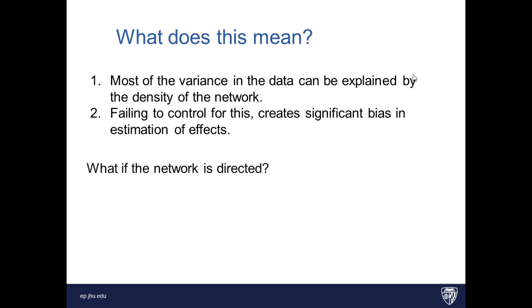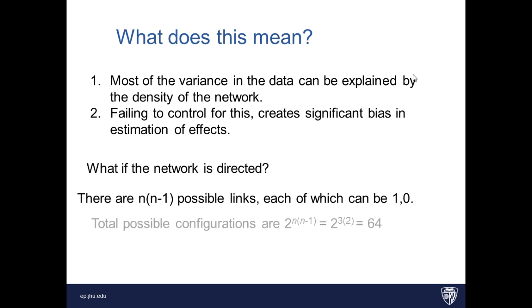Okay? What happens if the network is directed? We were only looking at undirected, and there were eight configurations. What happens if we make it directed? Well, there are n times n minus one possible links, each which can be one or zero. So that ends up being two to the n times n minus one, or 64 possible configurations you can have in your network. The number of ways to have only one link, then, becomes two times three choose two, or two times three,